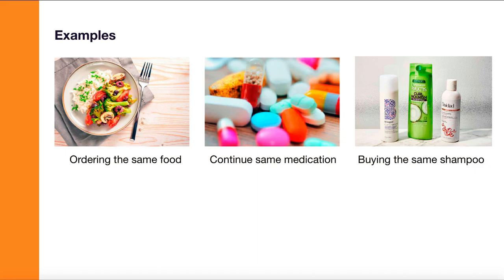We can see the status quo bias practically every day. For example, have you seen people who go to a restaurant, go through the entire menu end-to-end, but you already know what they're going to order? They order the same thing because they have a strong status quo bias — they've had something before, it was good, and they feel the new dish probably won't be as good.